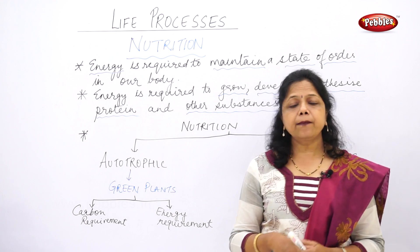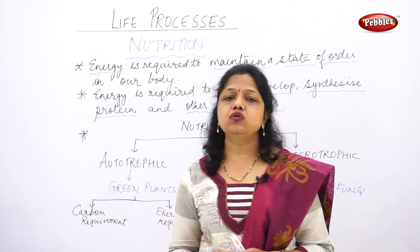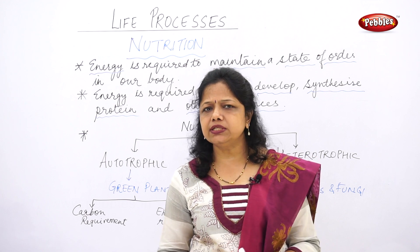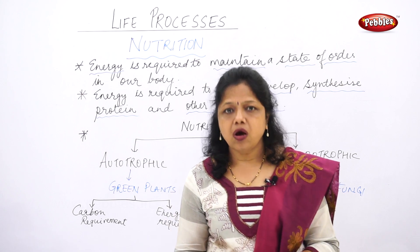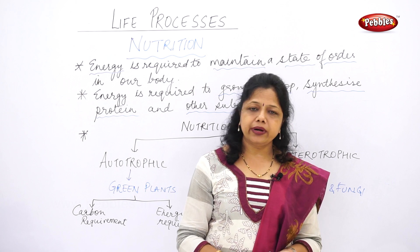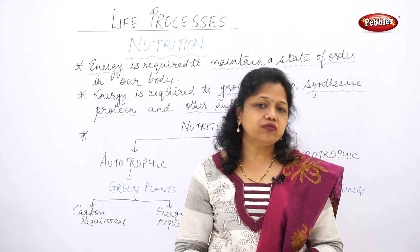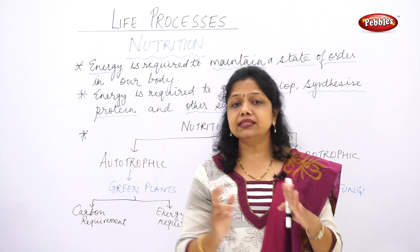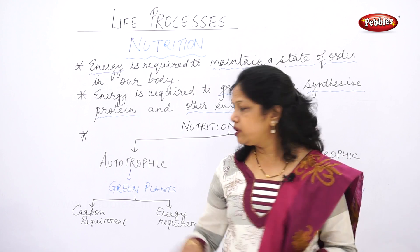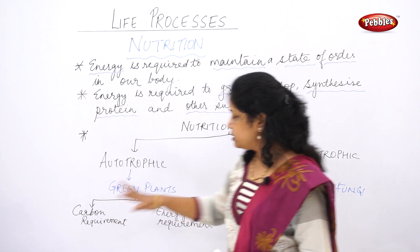Green plants have chlorophyll. Chlorophyll is used for making food, but chlorophyll alone will not work — they also need raw materials from the surroundings: sunlight, carbon dioxide, and water. So green plants synthesize their food using carbon dioxide and water in the presence of sunlight.